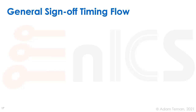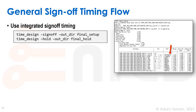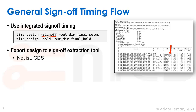This brings us to the general sign-off timing flow in a Cadence tool like Tempus. The 'time_design' command is a super-command that runs many report timing commands. Using the minus sign-off option, it calls the QRC extraction tool — a very accurate extraction tool — runs timing reports, and provides options such as path-based analysis and parametric OCV.